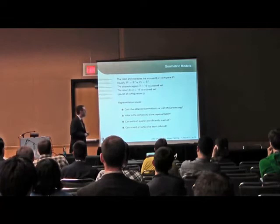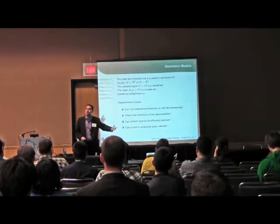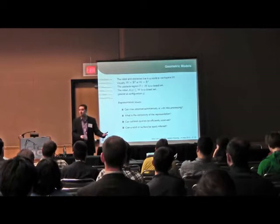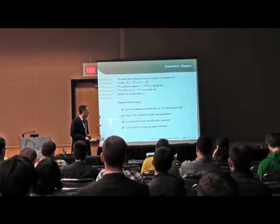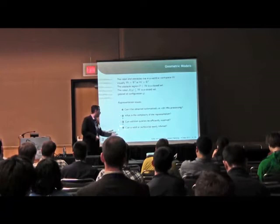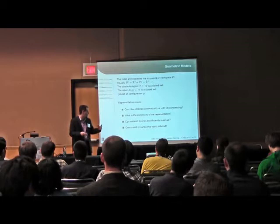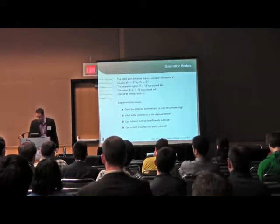Here are the kinds of issues we tend to think about. Can we obtain this geometric representation automatically? Maybe you do a SLAM in this building here — can you easily transform that into models that can be used for motion planning? What is the overall complexity of the representation? We care about deciding on collision efficiently. It may also become important to infer whether or not we're talking about a solid obstacle that has a very clear interior and exterior, or whether that's difficult to determine.